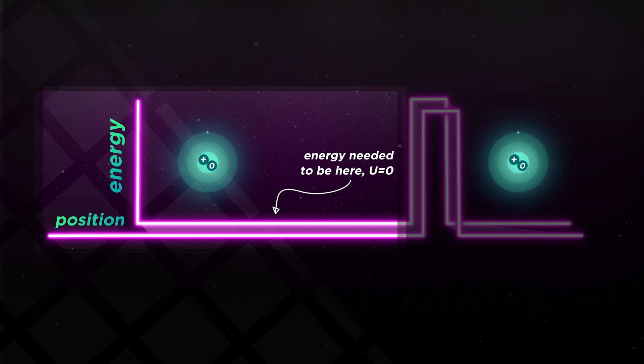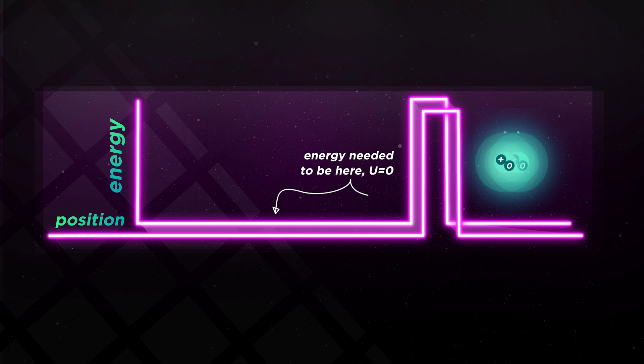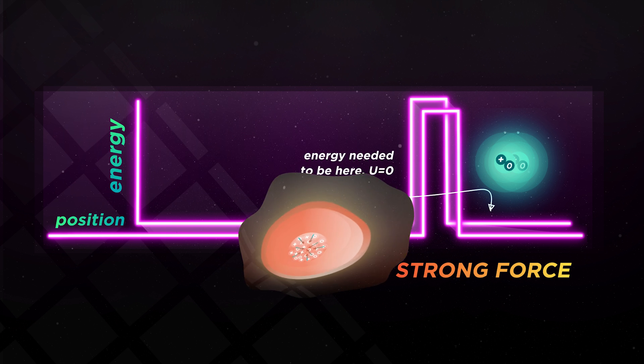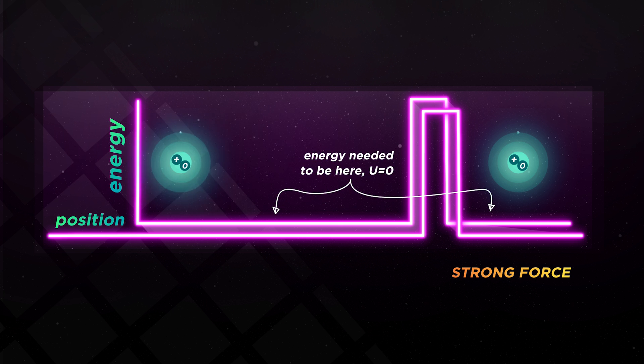Also notice that once we pass through the barrier, the energy needed to be there is also minimal. But why? This is because once we get past the barrier, the strong force takes over. What is that? This is what glues multiple protons and neutrons in the nucleus, but it only works at extremely small distances. So you basically have to go through this wall of repulsion before you can reach the stable, strong force area.